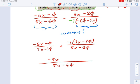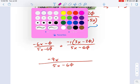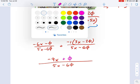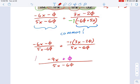And it looks like I've got a negative phi and a positive 2 phi when you multiply it by that negative 1. So that becomes positive phi. And there's nothing else to cancel out at this point. We have simplified this into a single fraction. And that is where we stop.